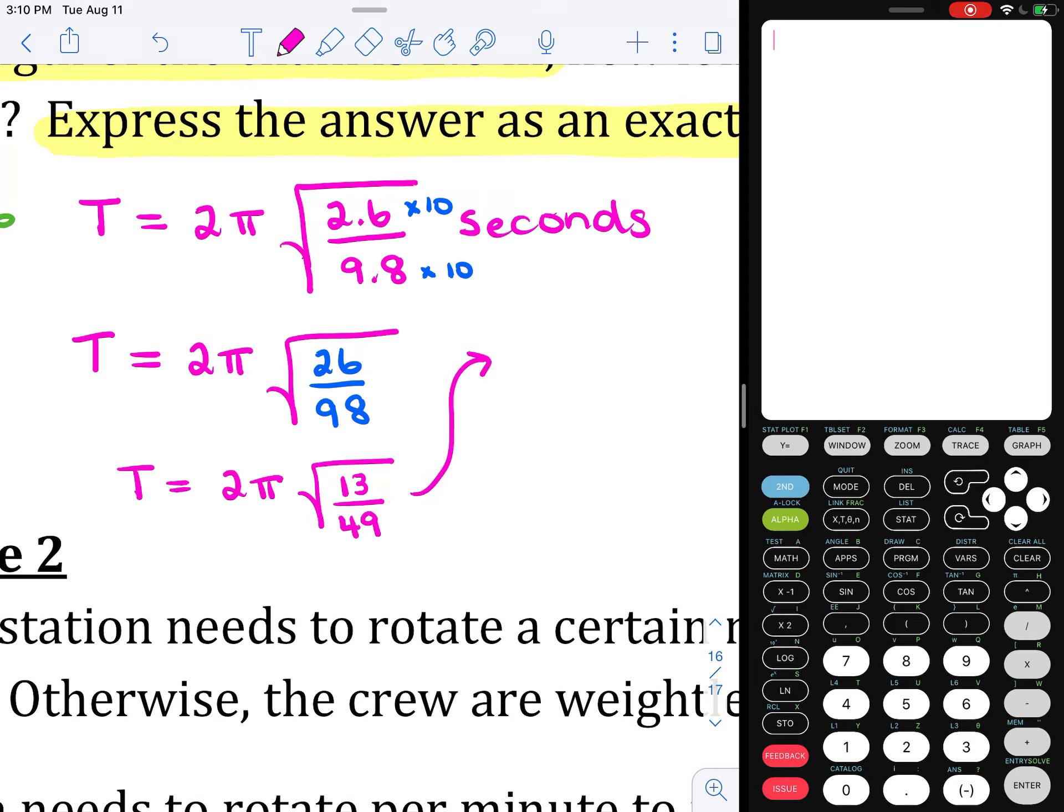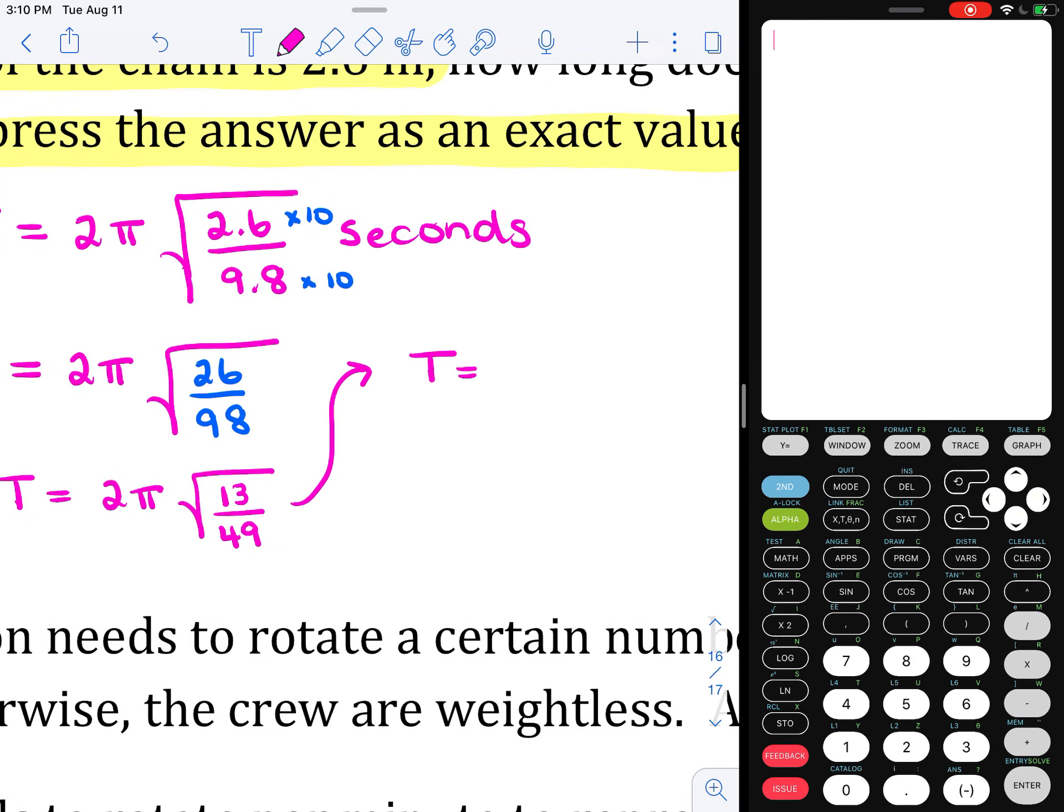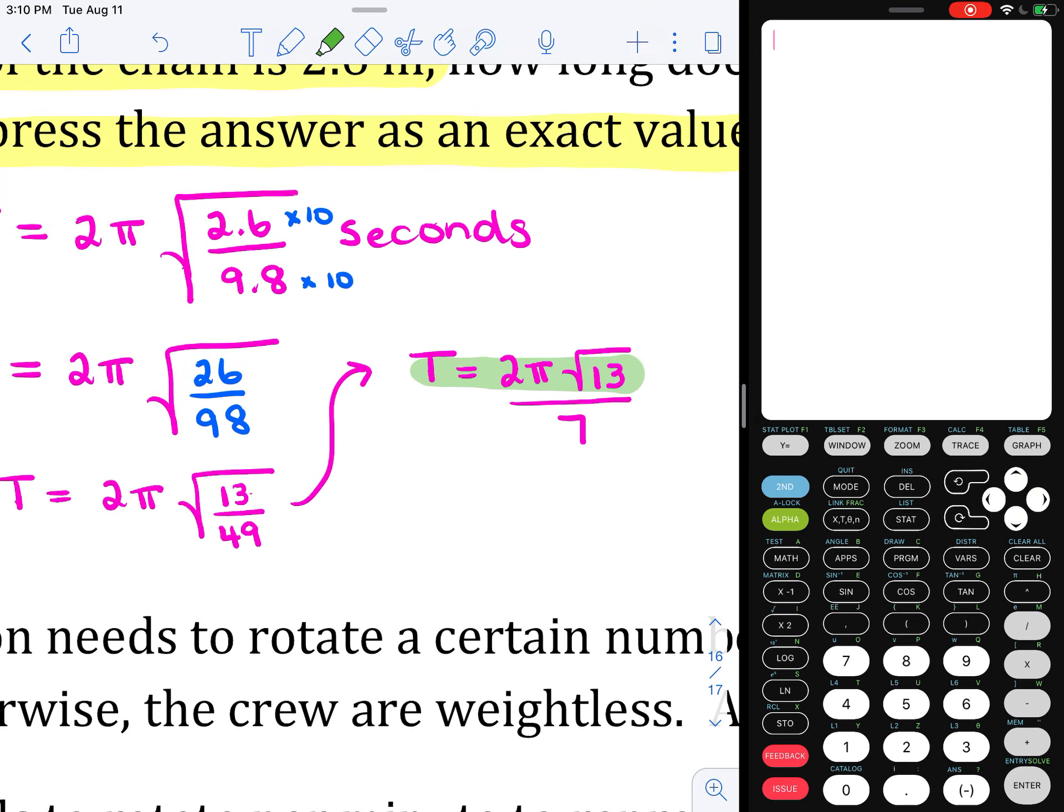The neat thing about this is I can now write this as T equals 2π... Remember, square root of a fraction is the same as root of the top over root of the bottom. I could write this as the root of 13 over—what's the square root of 49? The square root of 49 is 7. My guess is that in multiple choice form, this would be your final answer.